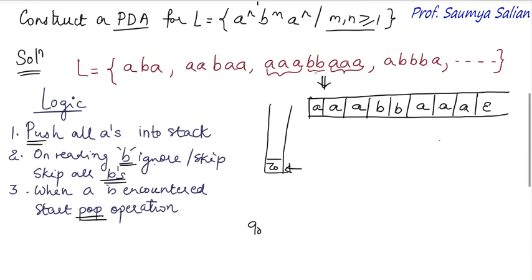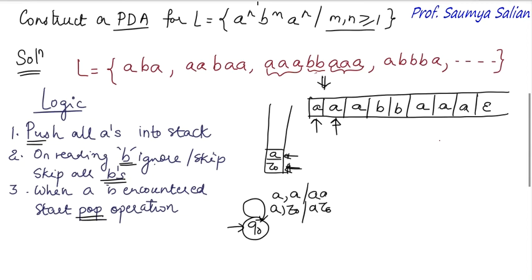Starting at state Q0, the read head is at the first A. On reading A with stack top Z0, we push A to the stack. We put a loop transition: on reading another A with stack top A, we push A to the stack again. This loop transition handles all subsequent A's — each A read with stack top A triggers a push operation, continuing for all the A's in the input.